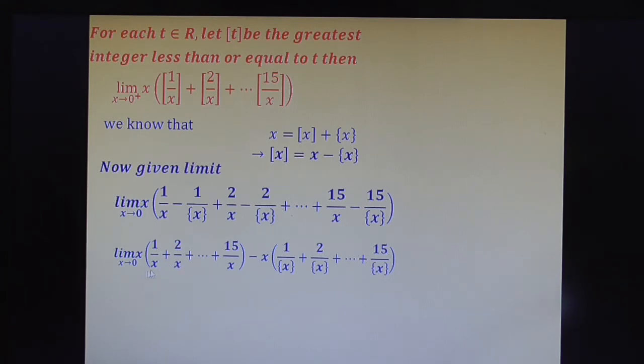So observe here clearly. Here denominator is x. You can add the numerator directly. Therefore here limit x tends to 0, x into 120/x minus limit x tends to 0, x of. So this remains and this is also you can add it as 120 by fractional part of x.